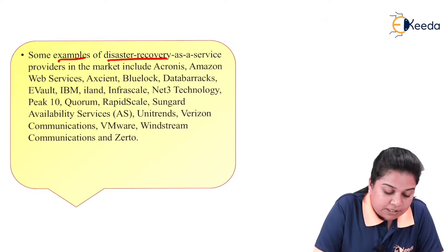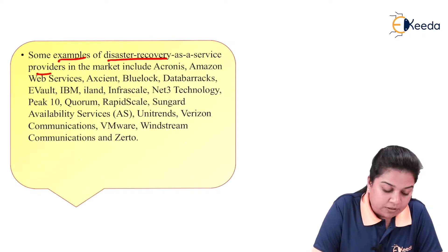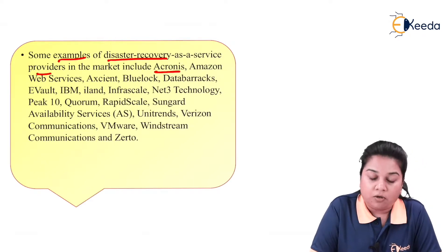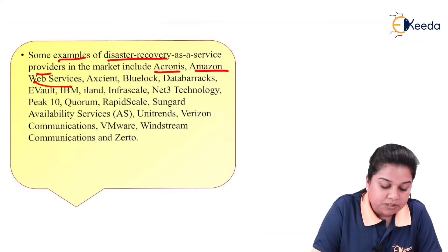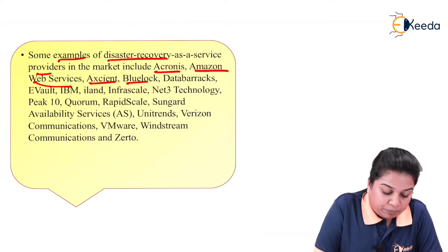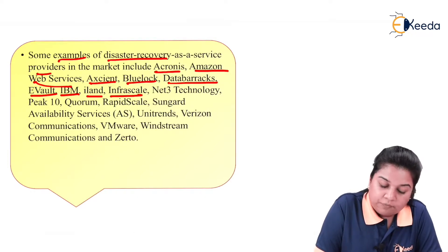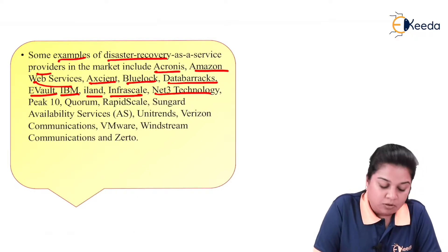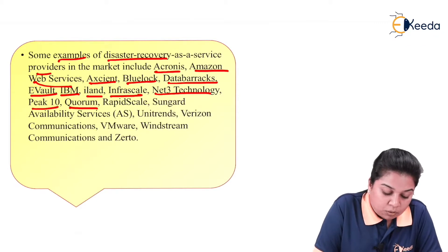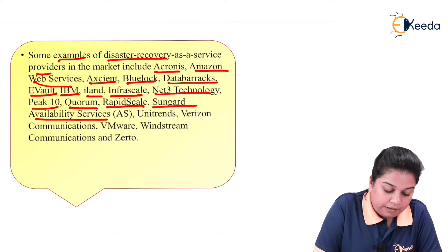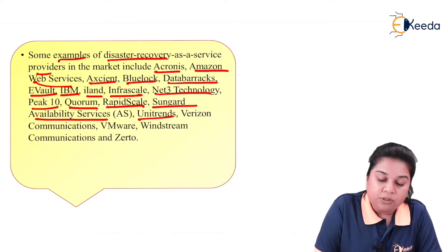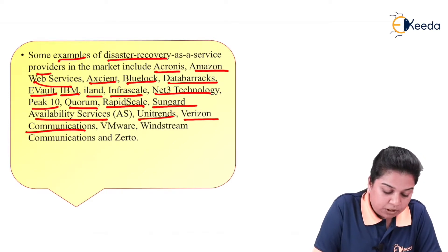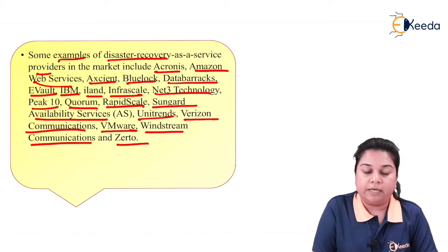Some examples of disaster recovery as a service providers in the market include Acronis, Amazon Web Services, Axcient, Blue Lock, Data Barracks, eVault, IBM, iLand, Infrascale, Net3 Technology, Peak 10, Quorum, RapidScale, SunGard Availability Services, Unitrends, Verizon Communications, VMware, Windstream Communications, and Zerto.